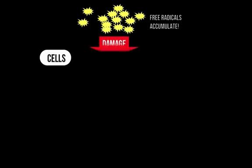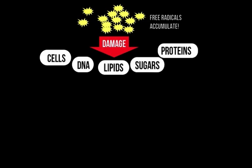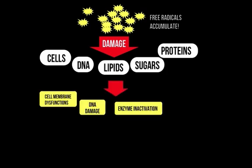When free radicals and other reactive oxygen species accumulate in the body, they cause damage to cells, DNA, lipids, sugars, and proteins. The damage caused by free radicals and reactive oxygen species in plants and animals could lead to deterioration of foods.